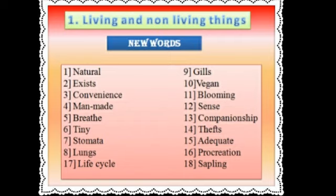Twelfth one: sense. Thirteenth one: companionship — companionship means a person who breeds with others. Next one: thefts. Thefts means the action or crime of stealing.